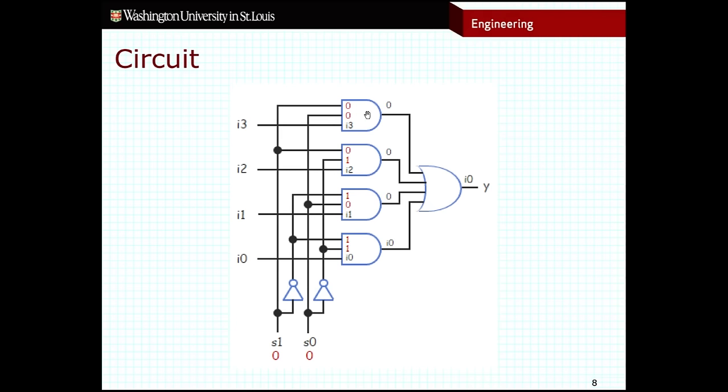If it helps make things simpler for you, you can actually decompose these AND gates and these OR gates into a series of two-input AND gates and two-input OR gates. It should get you the equivalent circuit.